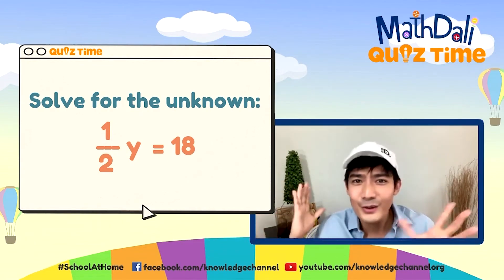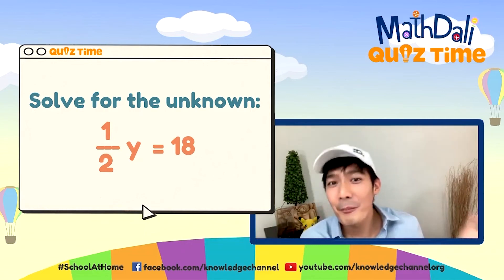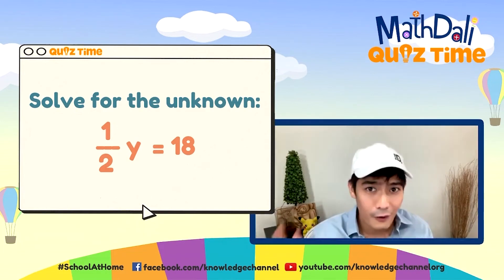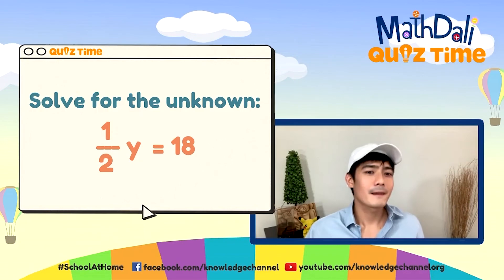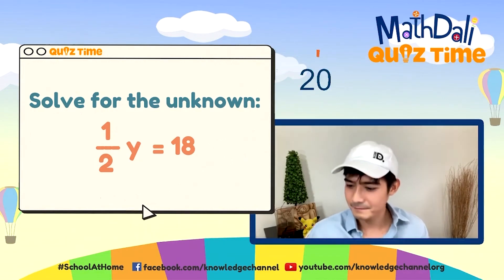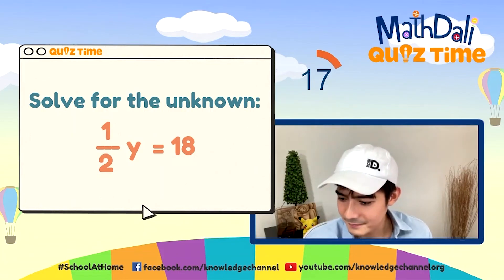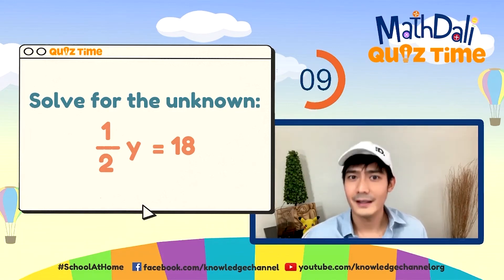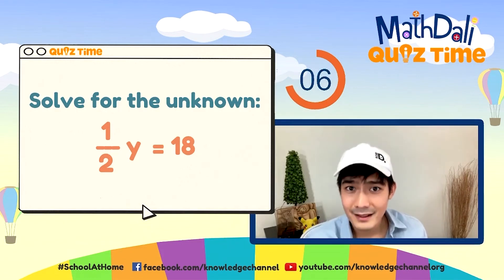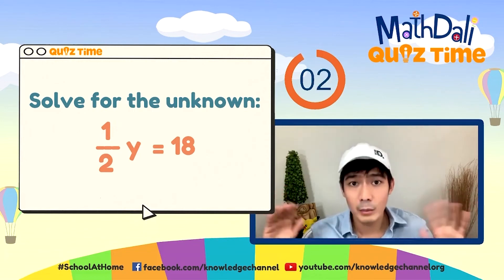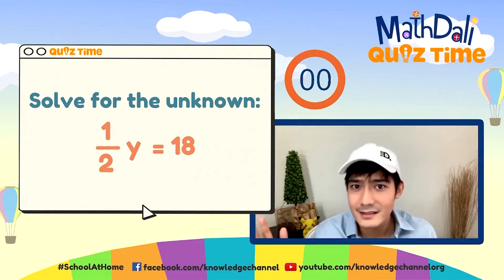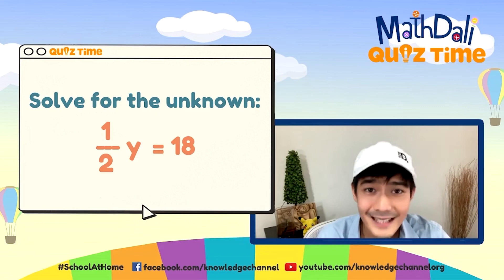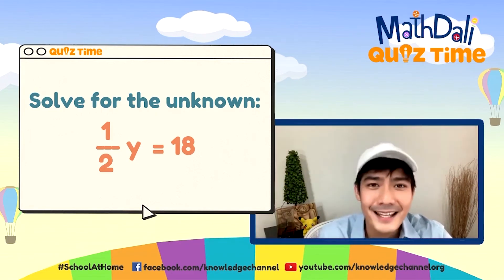Sa pagsosolve nito, yung A, B, C hanggang Z — pwedeng mag-iba yung letters nya. Pero the point is we have to solve for the value of the unknown — Y naman dito. Let's solve for this one — 20 seconds on the clock, go! So division naman to — multiplication kailangan natin gawin. Pwedeng maglagay tayo ng multiplicative inverses sa parehong sides. 1 over 2 Y is equal to 18 — ang tamang sagot ay 36.